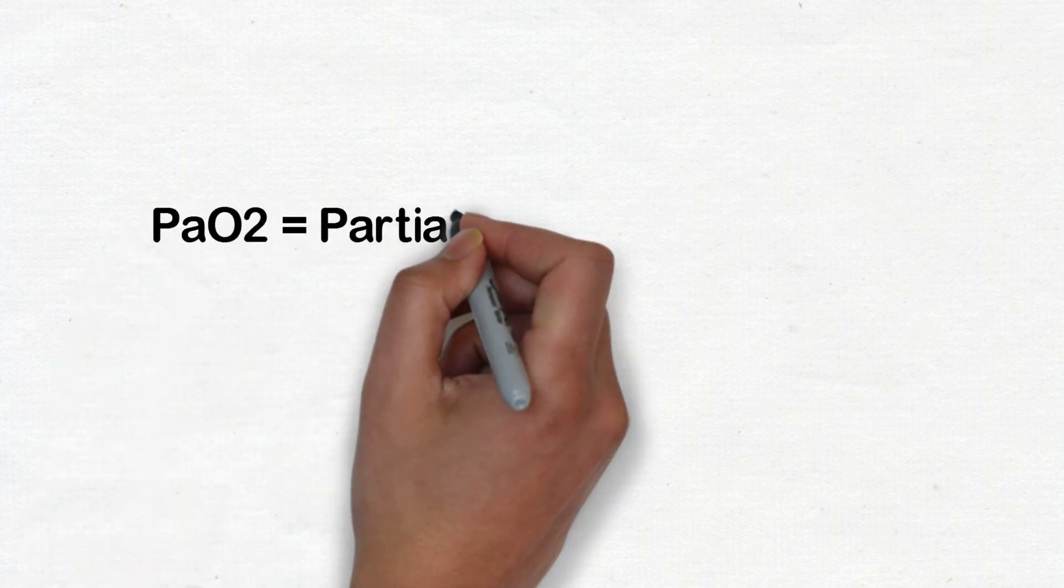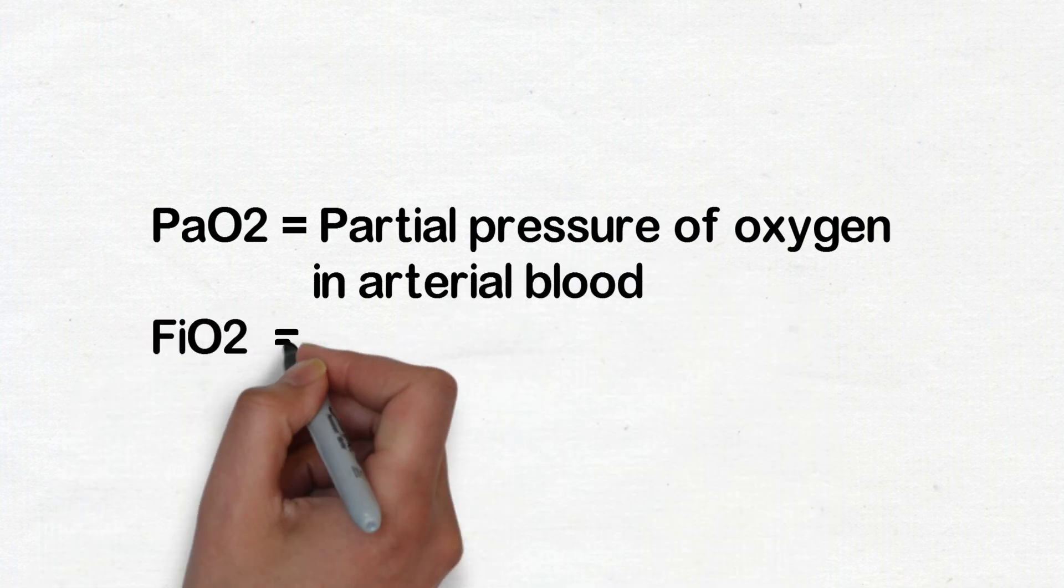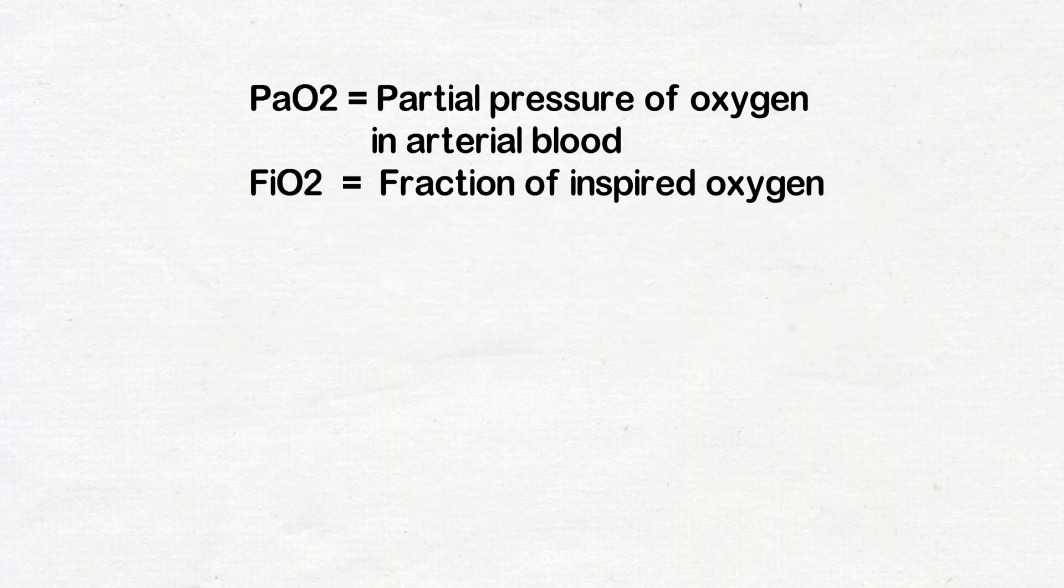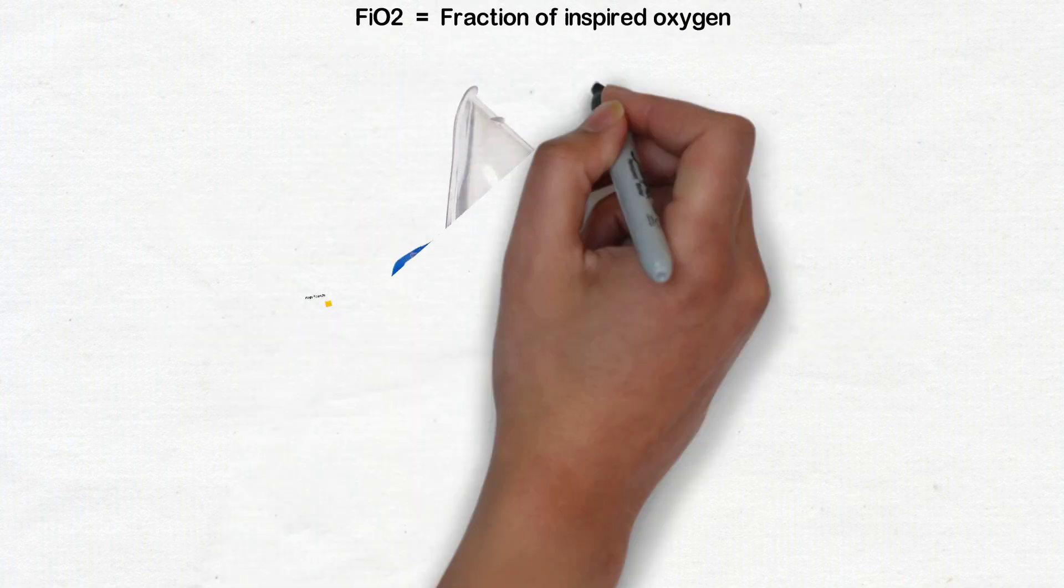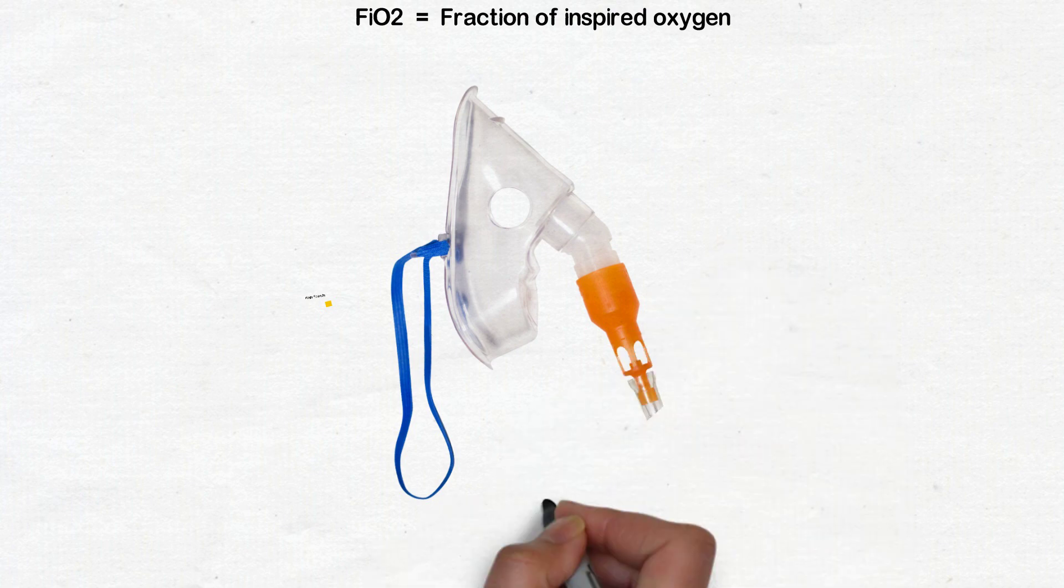Well you all know PaO2 is the partial pressure of oxygen in arterial blood and FiO2 is the fraction of inspired oxygen. FiO2 in normal atmospheric pressure is 21% and it varies with the mask and the liter of oxygen provided.